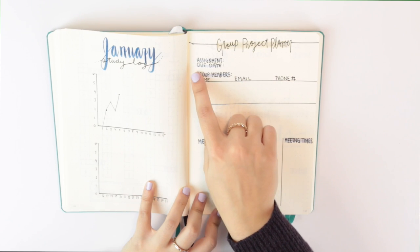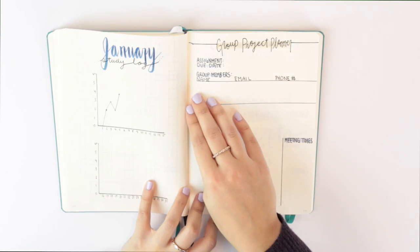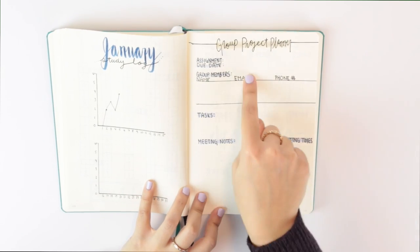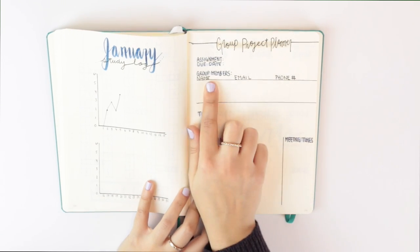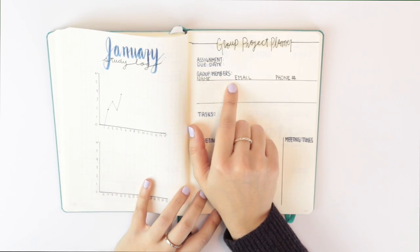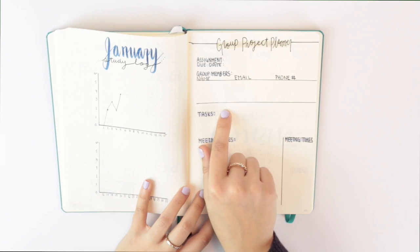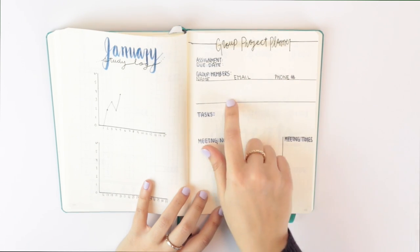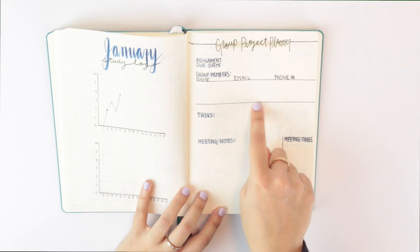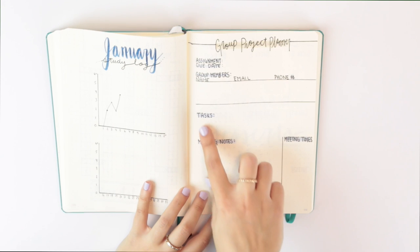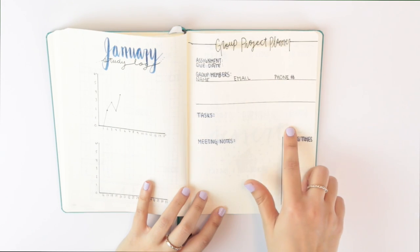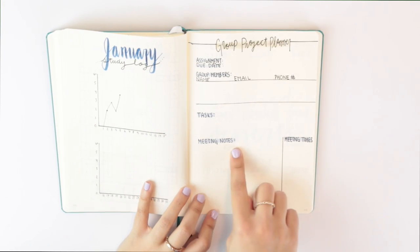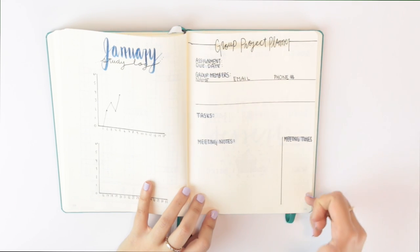I have a section for the assignment title, the due date, a section to keep track of group members' names, email, and phone numbers. I should actually also add a section for student number here because when you submit projects you also need to submit your student number, which is kind of like your identity with your school. So that may be a nice little addition there when I make this page again. I have a section for tasks that we have to do for the project. There's a section for meeting notes and also meeting time so I know when we are getting together next.